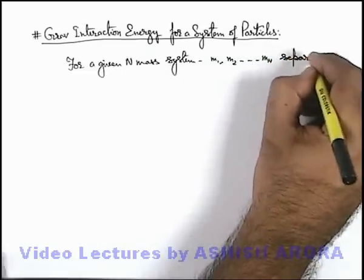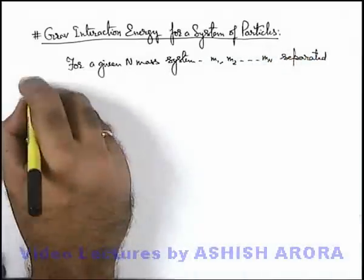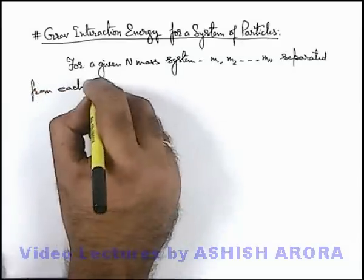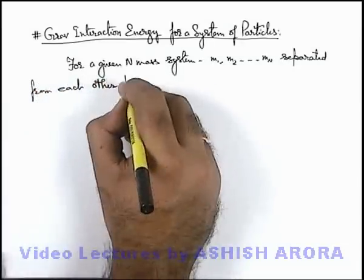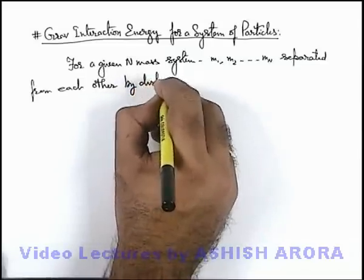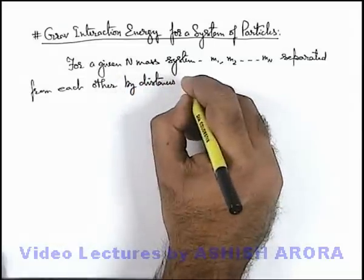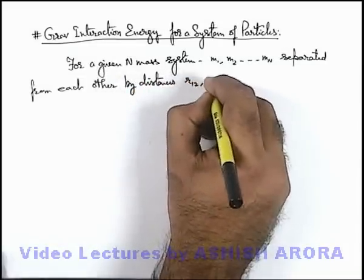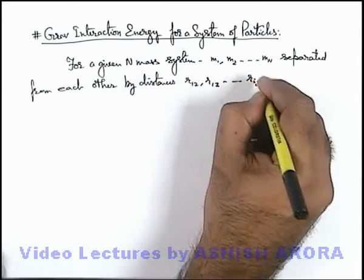Which are separated from each other by distances which are given as r12, r13, and so on up to rij.